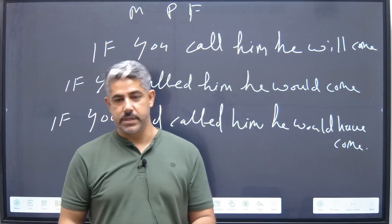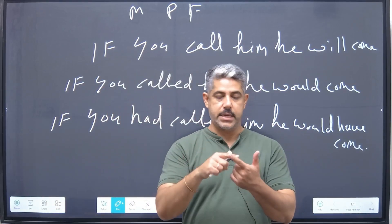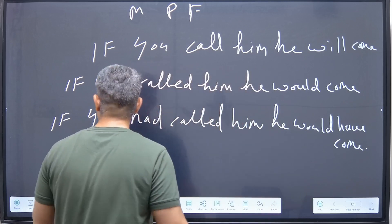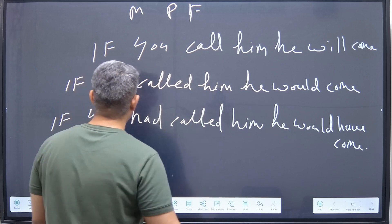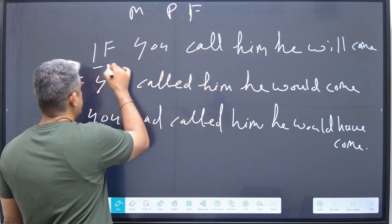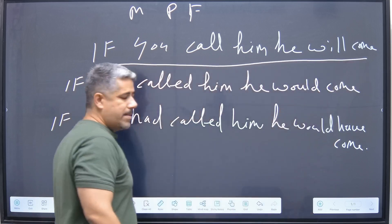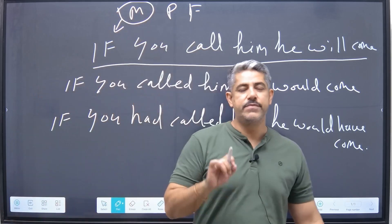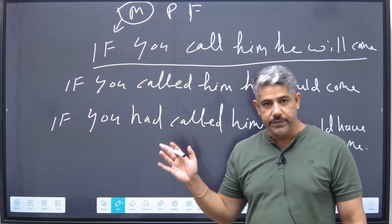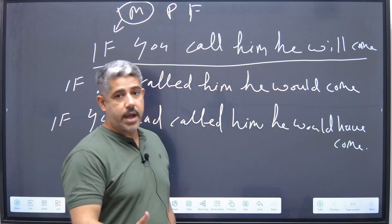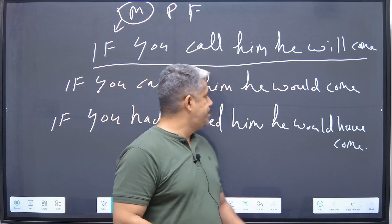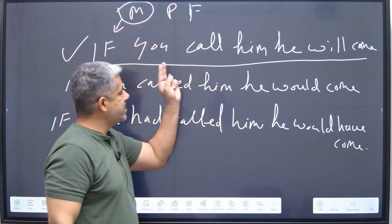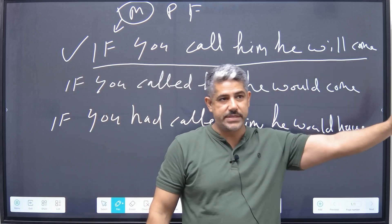So these three sentences I've given you. My question is: what is the difference between first, second, and third? They're known as first conditional, second conditional, and third conditional. This first one is about something that will happen for sure — meaning, something will happen for sure if a certain condition is fulfilled. If you call him, he'll come. That's for sure. If you work hard, you'll get good grades. That's for sure. People do not have a problem with this one, mostly, because it's very easy to understand.